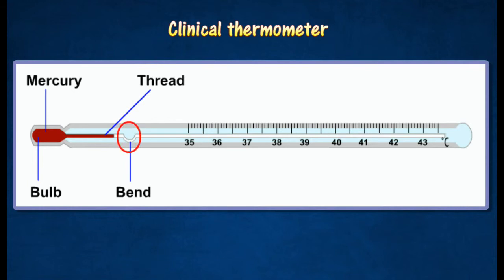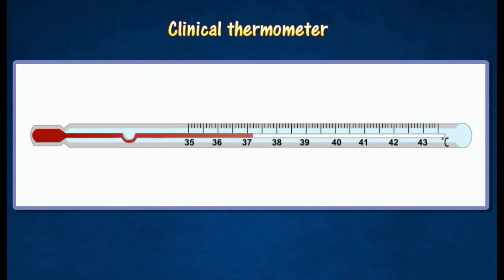The tube of a clinical thermometer has a constriction just beyond the bulb. When the thermometer is placed under the tongue, the mercury expands, forcing its way past the constriction.